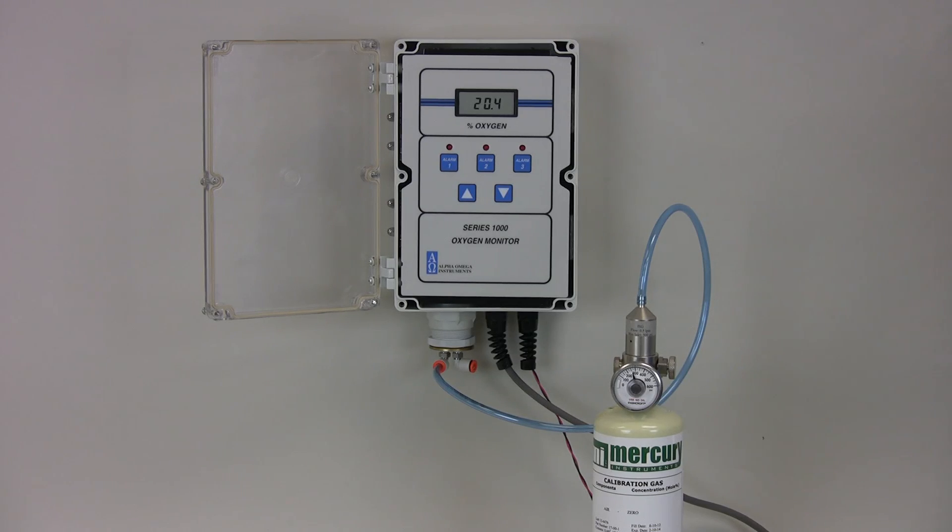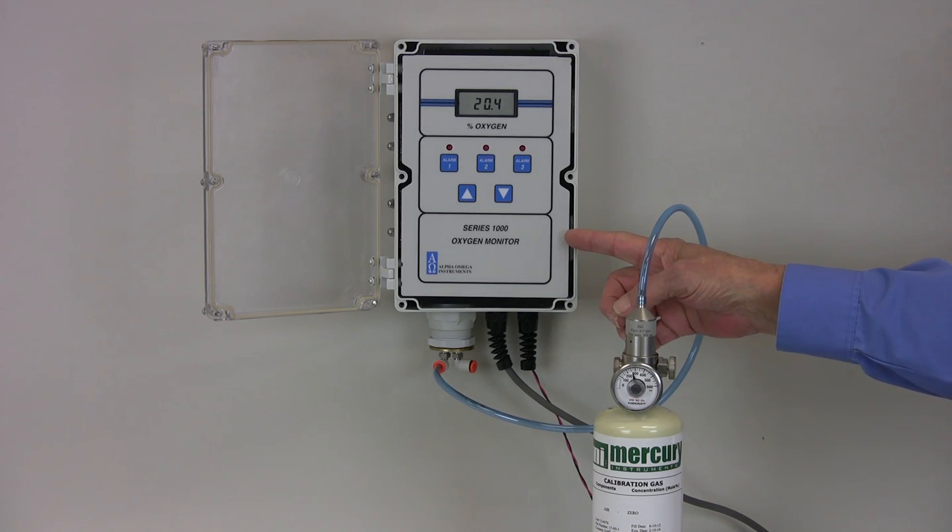Greetings. Today we are going to calibrate an Alpha Omega Instruments Series 1000 Oxygen Deficiency Monitor that has been outfitted with a calibration fixture.